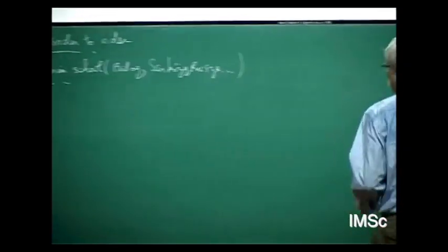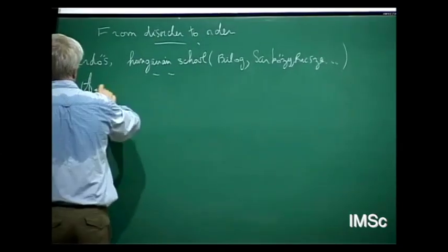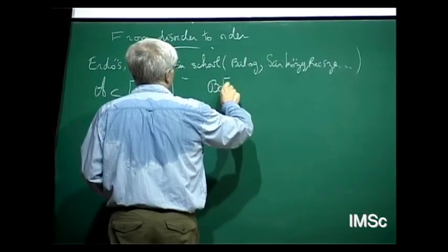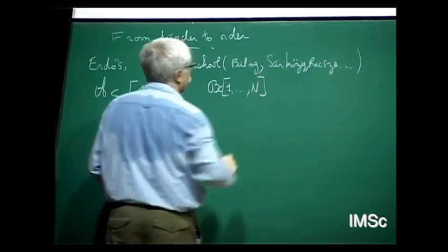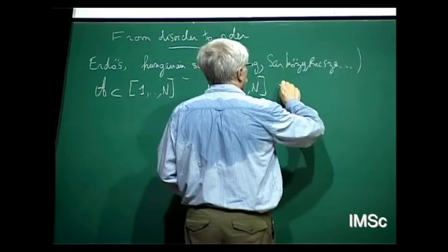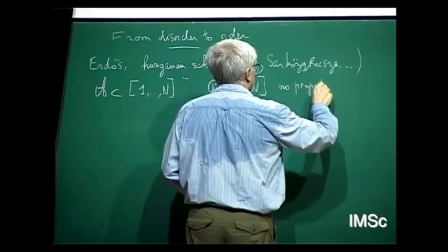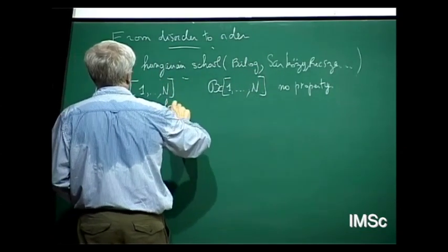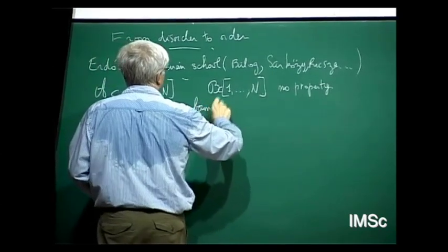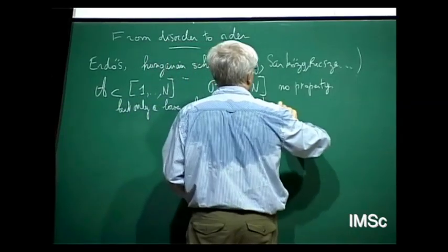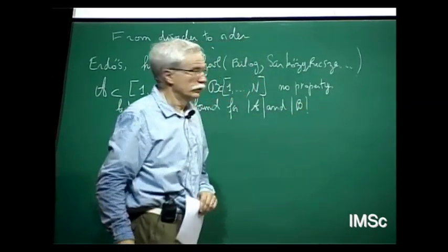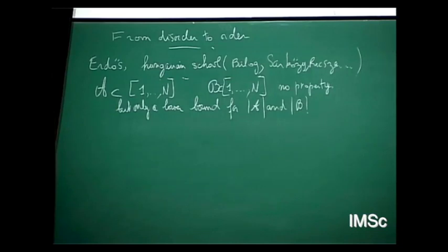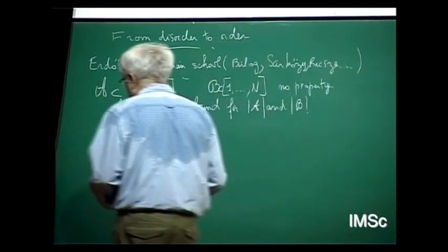You start from a sequence A included in [1,N] and another sequence B included in [1,N]. I insist: I shall ask no property — no precise property — but only a lower bound for the cardinality of A and cardinality of B. So that is what I call disorder. It may contain no primes, or have a bad distribution in arithmetic progressions. And now, how to create order? There are several possibilities.